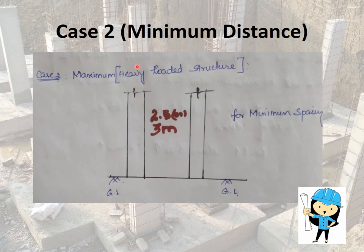In heavy loaded structures, the load from the slabs and the beams are very high. To counteract the loads from the beams and the slabs, the columns are closely spaced. In some cases, we can extend the distance between the two columns in the heavy loaded structure and we can change the type of foundation we use. We can use the raft foundation or the mat foundation in the heavy loaded structures.